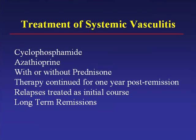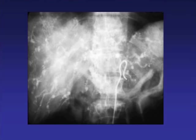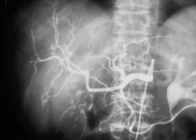A celiac angiogram in classic PAN shows nodular aneurysmal lesions on angiography—these can also be seen in Churg-Strauss. These nodose lesions can be identified on MRI, CT, and other modern imaging methods. The next slide shows the same patient one year after treatment, with the nodular lesions all resolved and significant improvement. Immunosuppressive effects of cytoxan in systemic vasculitis include multiple mechanisms.